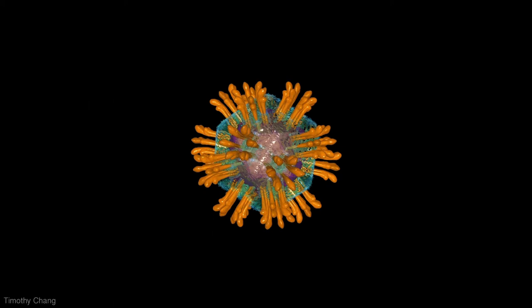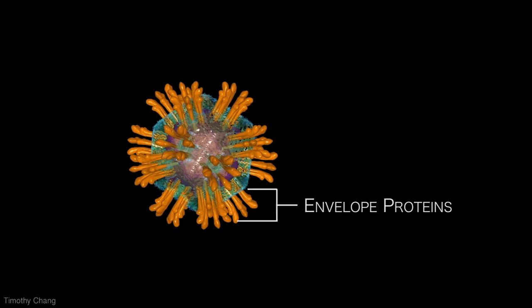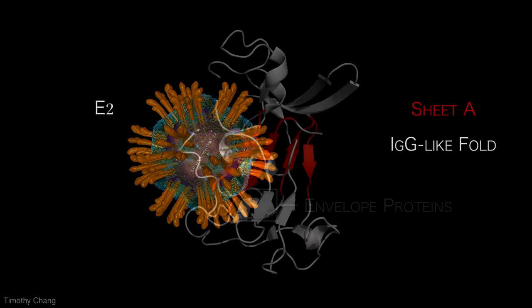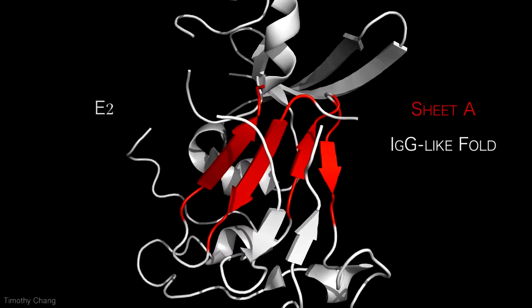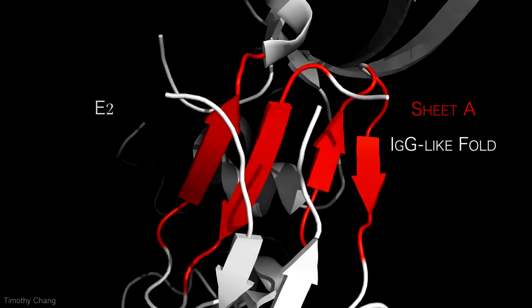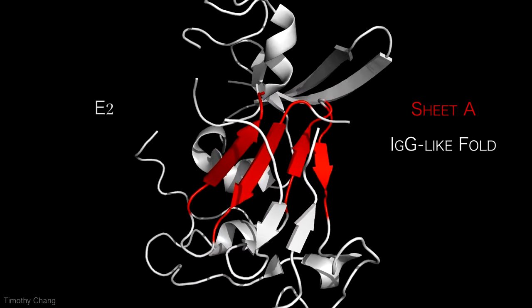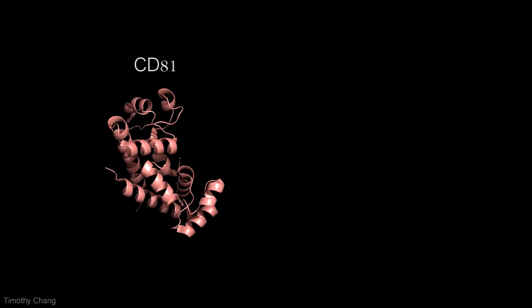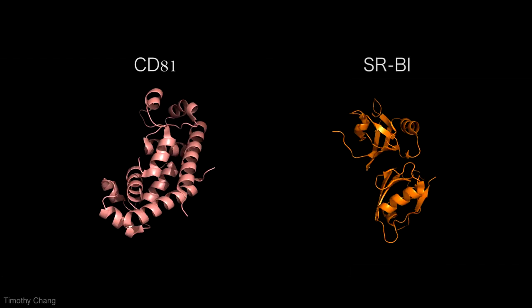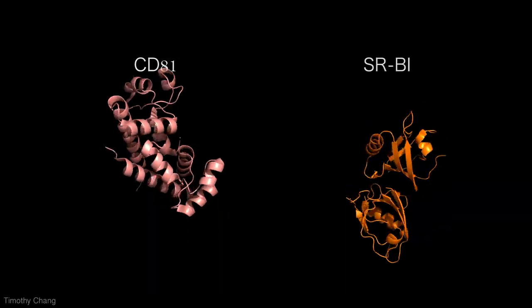Several significant challenges still remain in the study of E2 as a potential HCV fusion inhibition site. Though E2 has some structural homology with other class II fusion proteins, some sequence analyses still suggest that E1 might be the better candidate. Also, CD81 is just one possible receptor on the host cell. It remains unclear whether other receptors such as SRBI are involved with viral endocytosis.